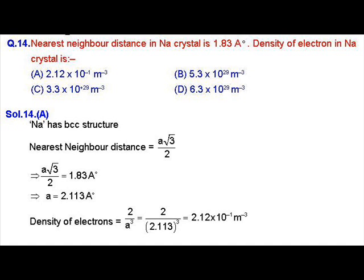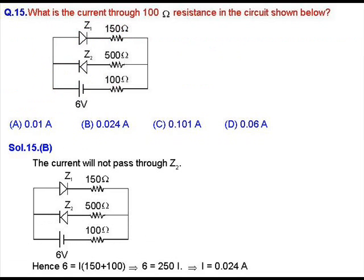So the correct option will be option A. MCQ question number 15: In this question we have been asked to calculate the current through the 100 ohm resistor in the circuit shown below.